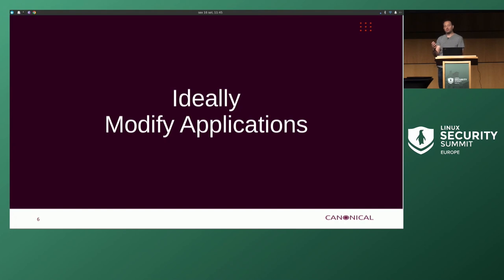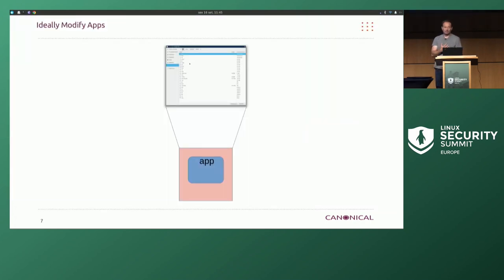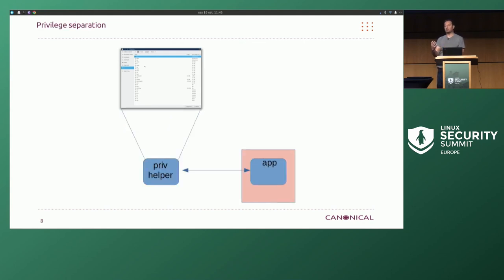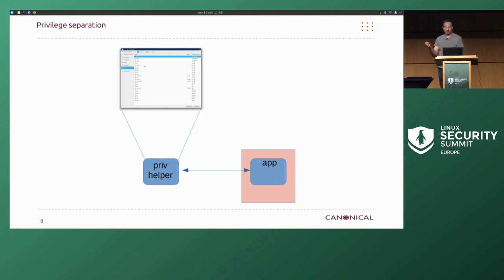Ideally, we do what Android did and said, 'we've got a new API, we're going to modify all apps to use the API so we can deal with privacy and data.' What we've got right now is code directly querying and saying, 'I want to see all the files in this directory.' We don't want to give that program access to all those files. We want privileged separation — we want the application to call out to something that has privilege, that we trust, which feeds back something to the application. We have something that can do this: we have portals now as a standard in Linux.